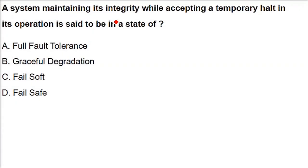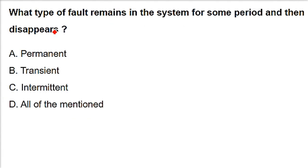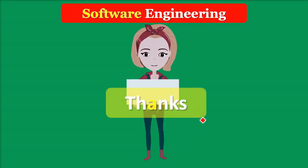A system maintaining its integrity while accepting a temporary halt in its operation is said to be in a fail-safe state. For example, if a database shows $20 in your account, integrity means it won't become $21 by itself. The system is at a halt but remains integral - it must be in a safe state. What type of fault remains in the system for some period and then disappears? That is a transient fault - it remains for a while and then just disappears. This concludes the MCQ session.